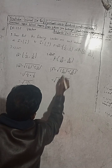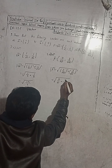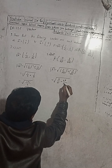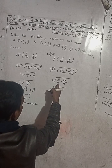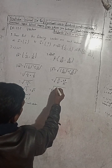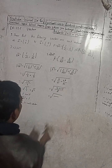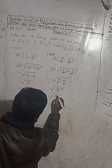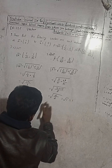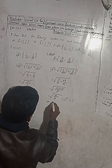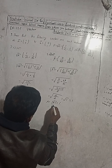For vector P: 4 squared is 16 and root 65 squared is 65; plus 7 squared is 49 and root 65 squared is 65. You can see the denominators are the same, so the LCM is 65, giving 16 plus 49 over 65, which equals 65 over 65. Root under 1 is 1. So as modulus of vector P is equal to 1, therefore vector P is a unit vector.